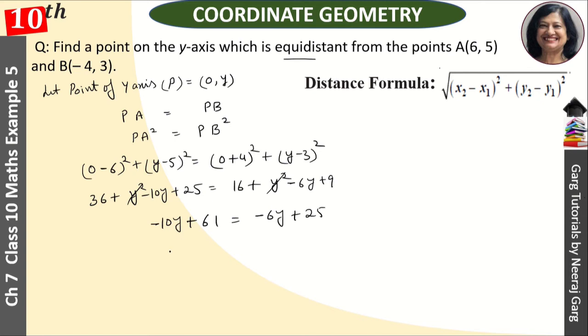-10y + 6y = 25 - 61. -4y = -36, minus and minus cancel. So y value comes out to be 9. This means our point on y-axis is (0, 9). This is our answer.